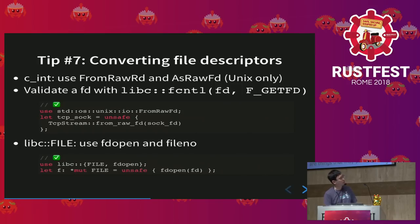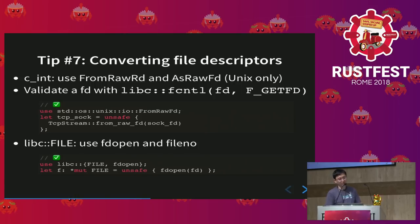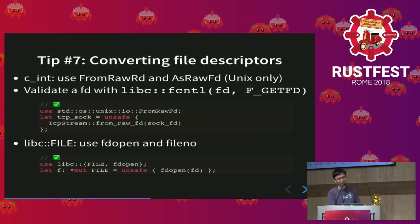Tip seven is about converting file descriptors — specifically c_int and libc's FILE pointer. In Rust on Unix, you can use from_raw_fd to convert a file descriptor into Rust objects like File or TcpStream. But the problem is this function usually doesn't validate the file descriptor, so you don't know if it is good until a later operation returns some IO error. We suggest validating the file descriptor with libc's fcntl so we can know if it really exists and is valid. For libc FILE pointers, since Rust std does not have such types, we still have to use unsafe libc — using fdopen and fileno, we can convert a file pointer to an integer file descriptor.